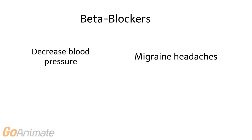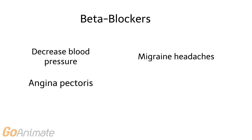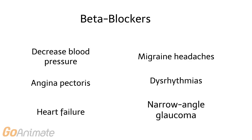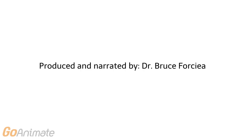Beta-blockers have many therapeutic uses including treatment of high blood pressure, migraine headaches, angina pectoris, dysrhythmias, heart failure, and narrow-angle glaucoma. I hope you've learned something about sympathetic nervous system drugs. See you next time.